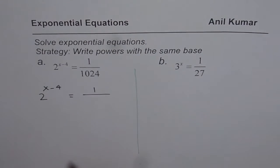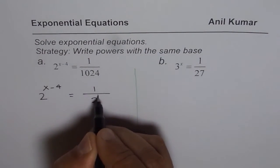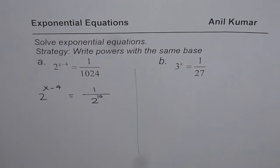Now 1024 can be written as base 2 to the power of 10. So we can use calculator. Check it out. 2 to the power of 10 is 1024.